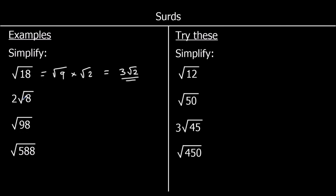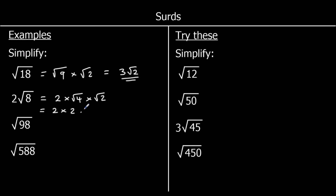For the second one, I've got 2 root 8. I can simplify root 8 because it's got a square number as a factor: 8 is 4 times 2. So I can change root 8 into root 4 times root 2. Root 4 is 2, so that's 2 times 2 times root 2. 2 times 2 is 4, so it's 4 root 2.